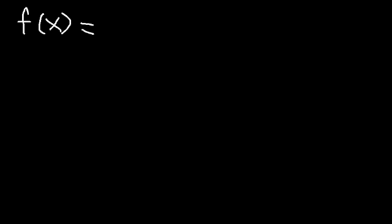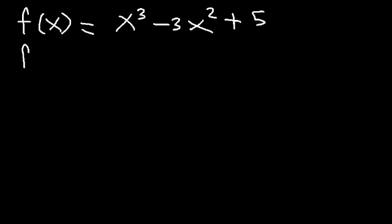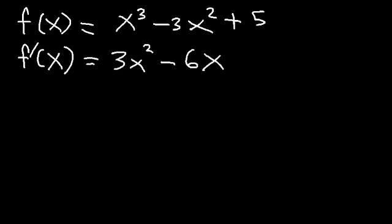Now let's work on an example. Let's say we have the function f(x) = x³ - 3x² + 5. Determine when the function is increasing, decreasing, concave up, concave down, any critical numbers, local extreme values, and inflection points. The first thing you want to do is find the first derivative. The derivative of x³ is 3x², the derivative of 3x² is 6x, and the derivative of 5 is zero.